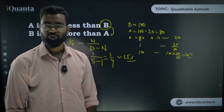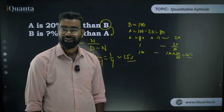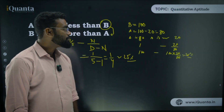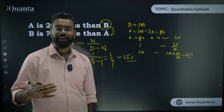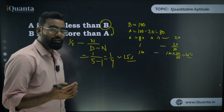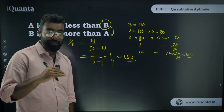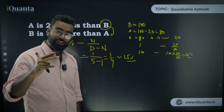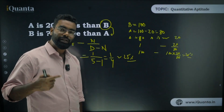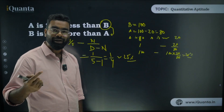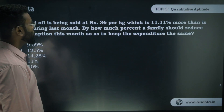So the answer is 25%. Remember: for base change, if the base is increasing, use denominator + numerator; if the base is decreasing, use denominator − numerator. This works best when you remember the fraction-to-percentage conversions.